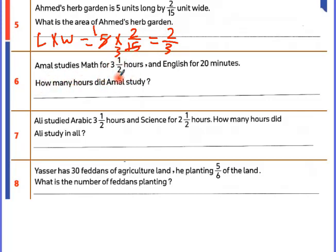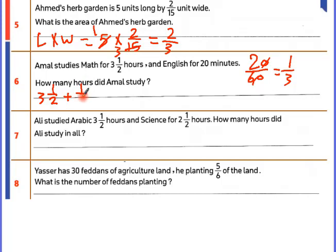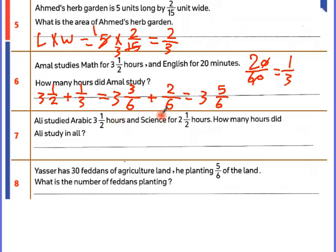Amal studied math for 3 and a half hours and English for 20 minutes. Convert 20 minutes to hours: 20 over 60, simplified to 1 over 3. Then add 3 and a half plus 1 over 3. Make the denominators the same: 2 times 3 equals 6. So 1 half becomes 3 over 6, and 1 over 3 becomes 2 over 6. Numerators: 3 plus 2 equals 5 over 6. Whole number stays 3. Total is 3 and 5 over 6 hours.